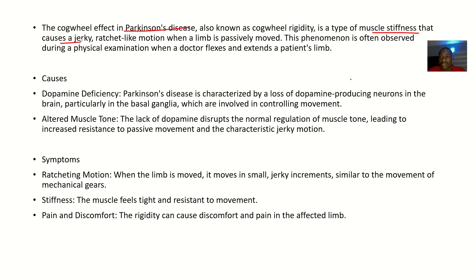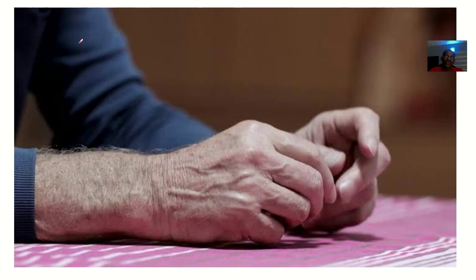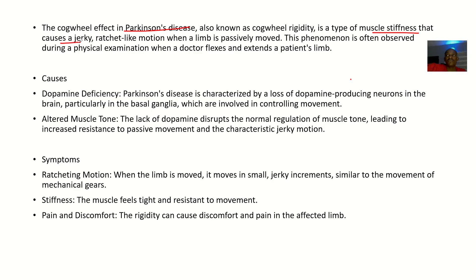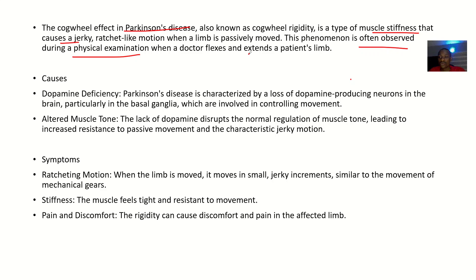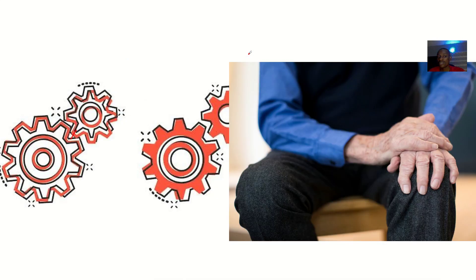It's a type of muscle stiffness that causes a jerky or ratchet-like movement when the limb is passively moved. Passive motion is where you are moving the limb for the patient, whereas active motion is when the patient moves it themselves. This phenomenon is observed during a physical examination when a doctor flexes and extends a patient's limb. Unlike lead pipe rigidity, which is a continuous rigidity, cogwheel rigidity comes and goes — just like cogwheels entering and coming out.